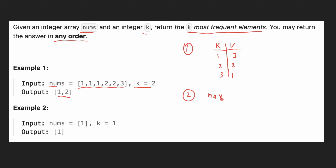We are going to implement this in Java. In Java, the maximum heap implementation uses a priority queue. The first step is we are adding each element to the hash map. We are increasing the frequency: for example, 1 is repeated three times, 2 is twice, and 3 is once.